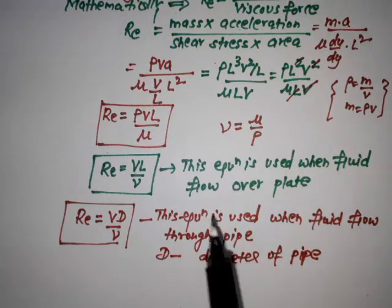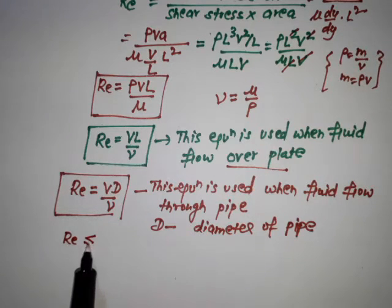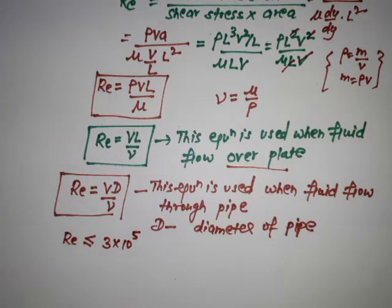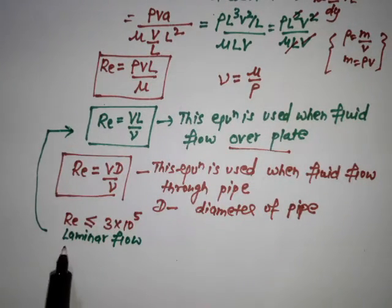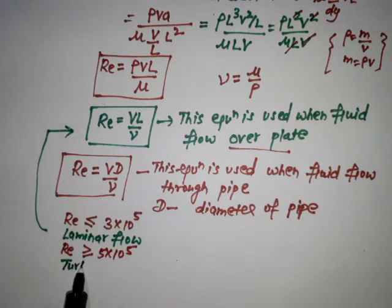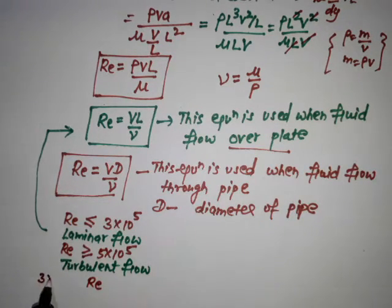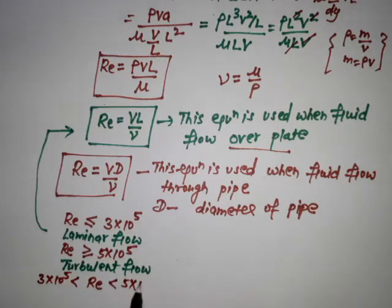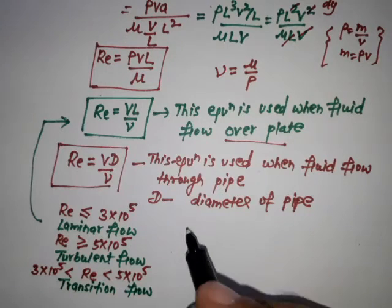Here, when fluid flows over the plate, in that case, Reynolds number: if it is less than or equal to 3×10⁵, then it is laminar flow. And if Reynolds number is greater than or equal to 5×10⁵, then it is turbulent flow. When Reynolds number lies between 3×10⁵ to 5×10⁵, then it is transition flow. This flow may be laminar or turbulent.